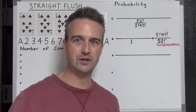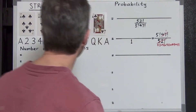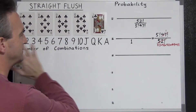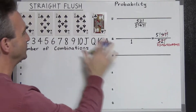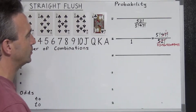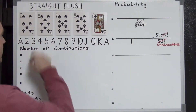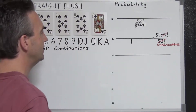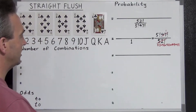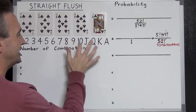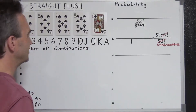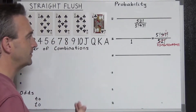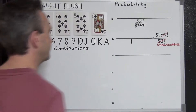First of all, what is a straight flush? A straight flush is when you have all cards the same suit and they are all in consecutive sequence — like 7, 8, 9, 10, Jack as we have here. You could also have 6, 7, 8, 9, 10, or you could also have 4, 5, 6, 7, 8. Some kind of a consecutive sequence like that.